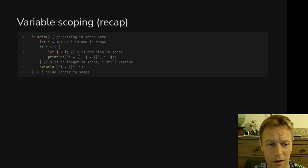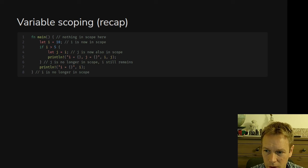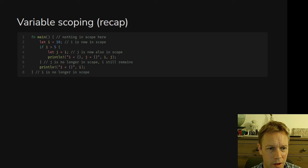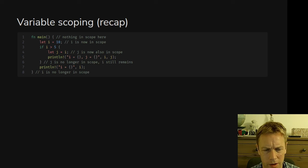Let's go back over scopes again. This is the same example we saw earlier — i and j have different scopes; j is only in scope inside that curly bracket. What we now know is that i and j in this example are Copy because they're both i32s, which are very simple values. That means when you say on line four 'let j = i', you're taking a copy of the memory of i, so if you then changed j it wouldn't change i — they're completely separate copies of the value 10.